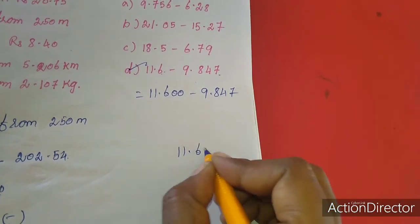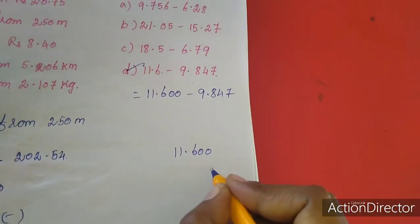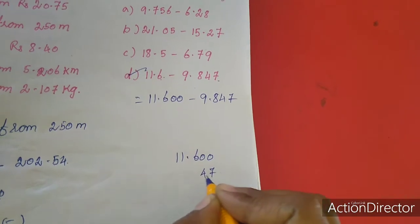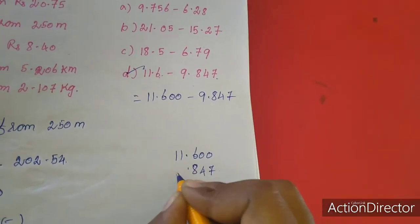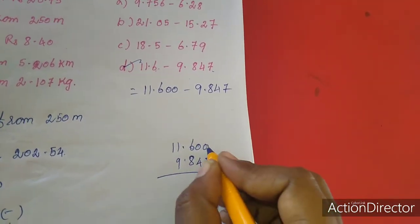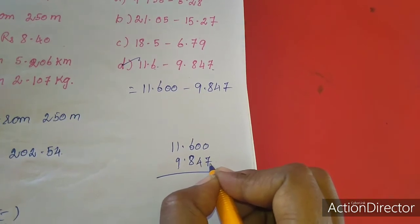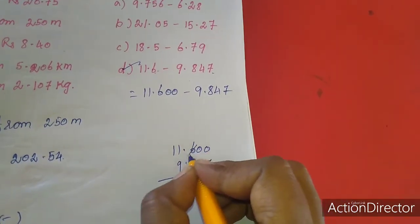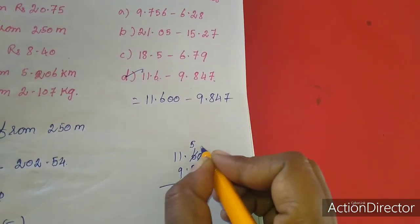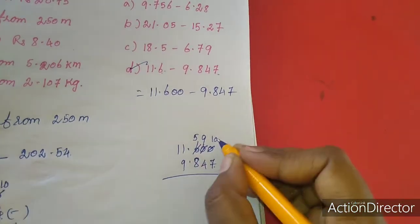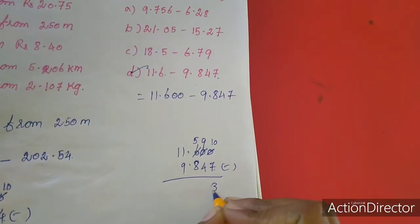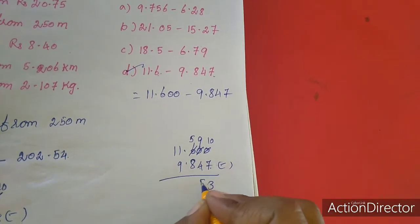So I am going to add two more zeros, that is 11.600 minus 9.847. I am going to do the subtraction, 11.600, I am writing from right, so 9.847. Now I am subtracting. 0 minus 7 will not be possible, so I am getting borrow from 6. So 6 will become 5, this 0 will become 9, this one will become 10. So 10 minus 7 is 3, 9 minus 4 is 5.